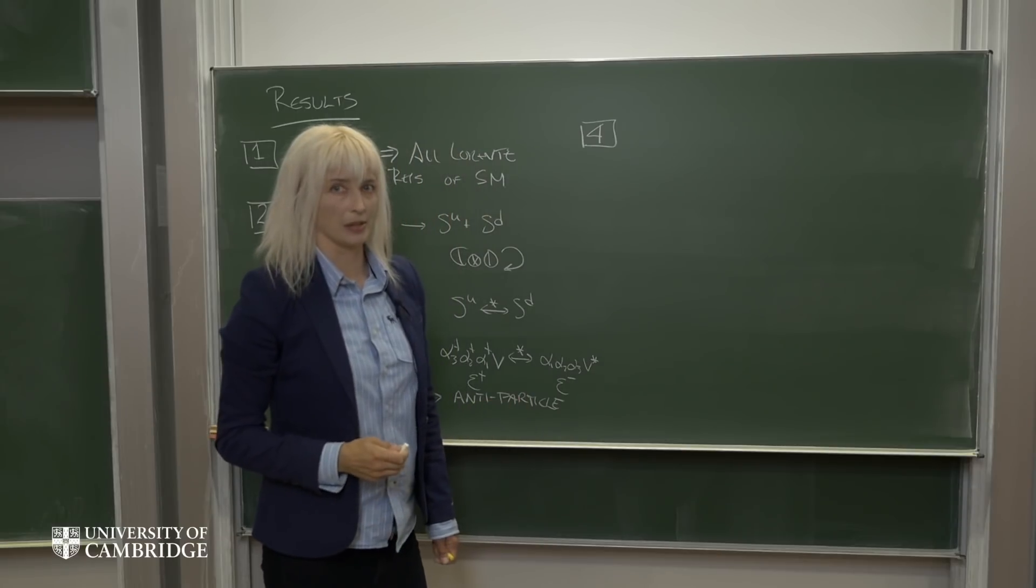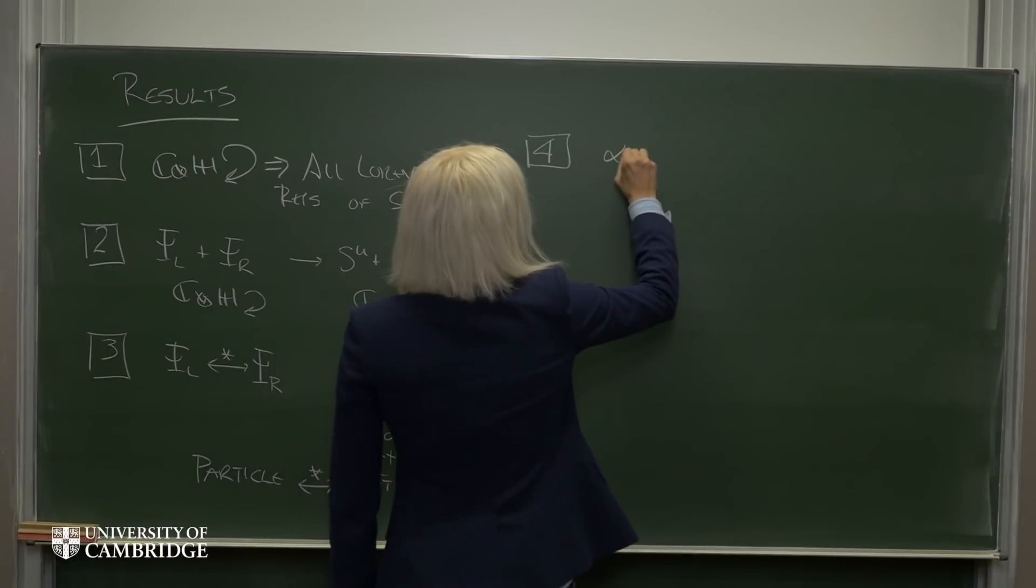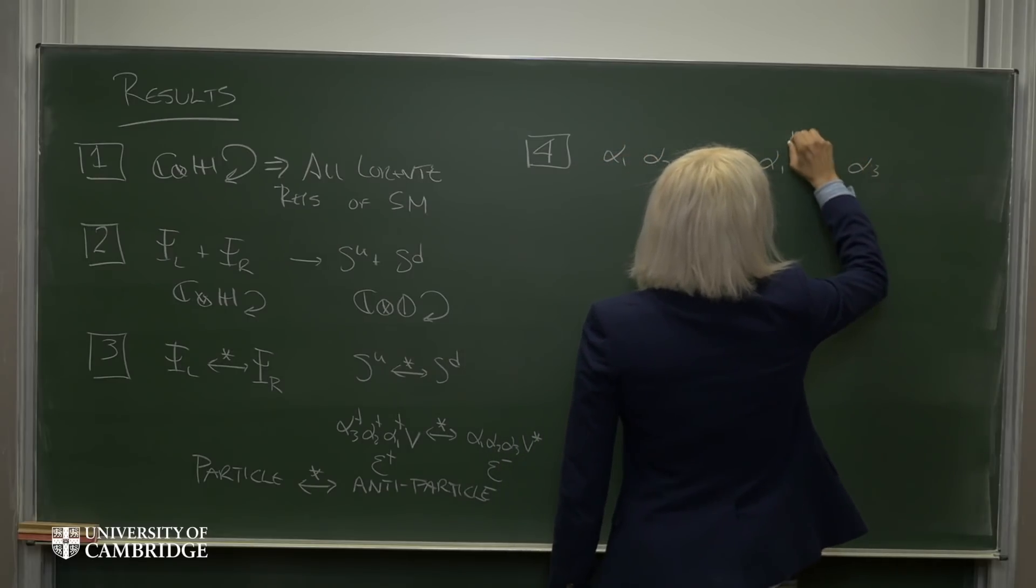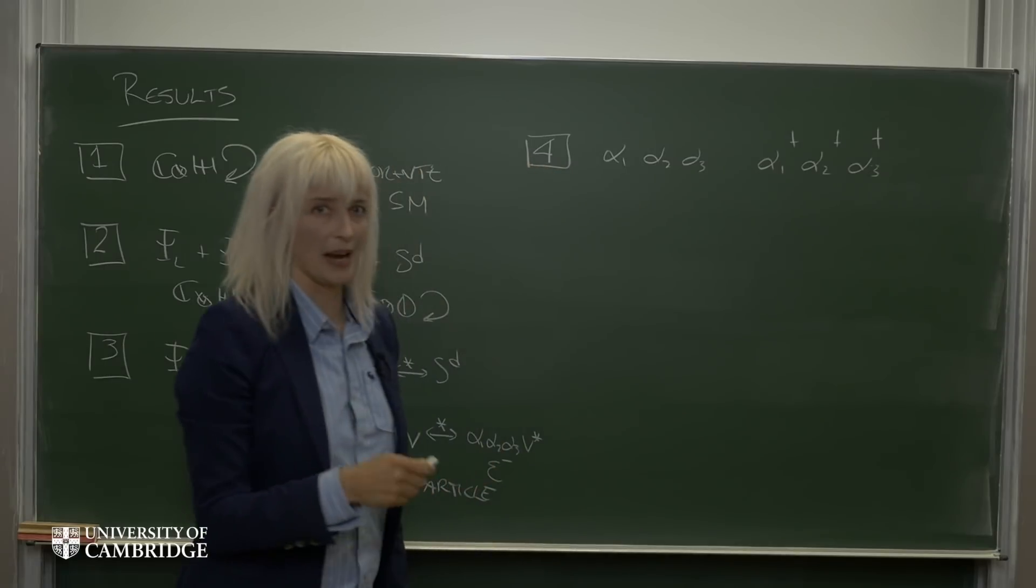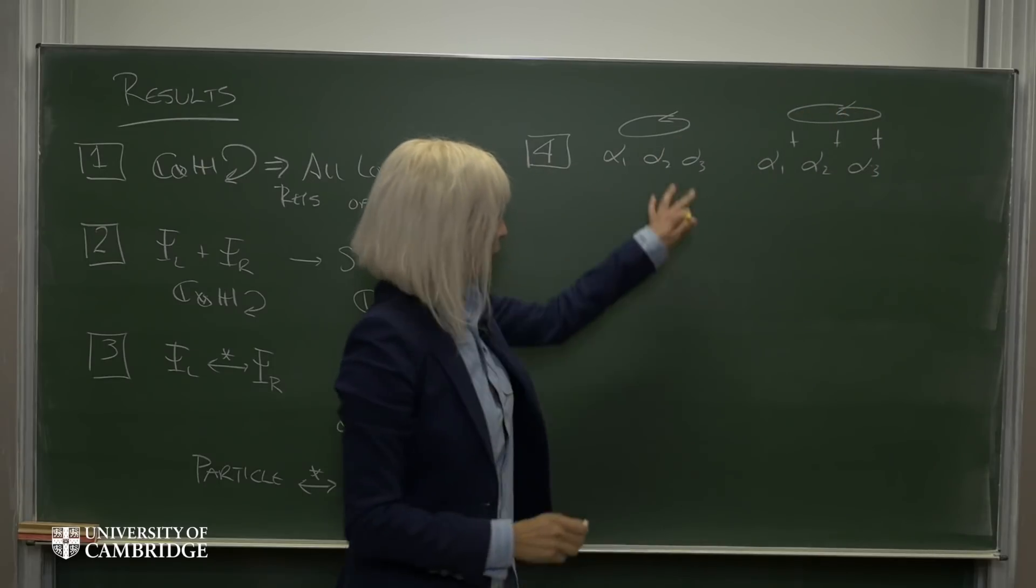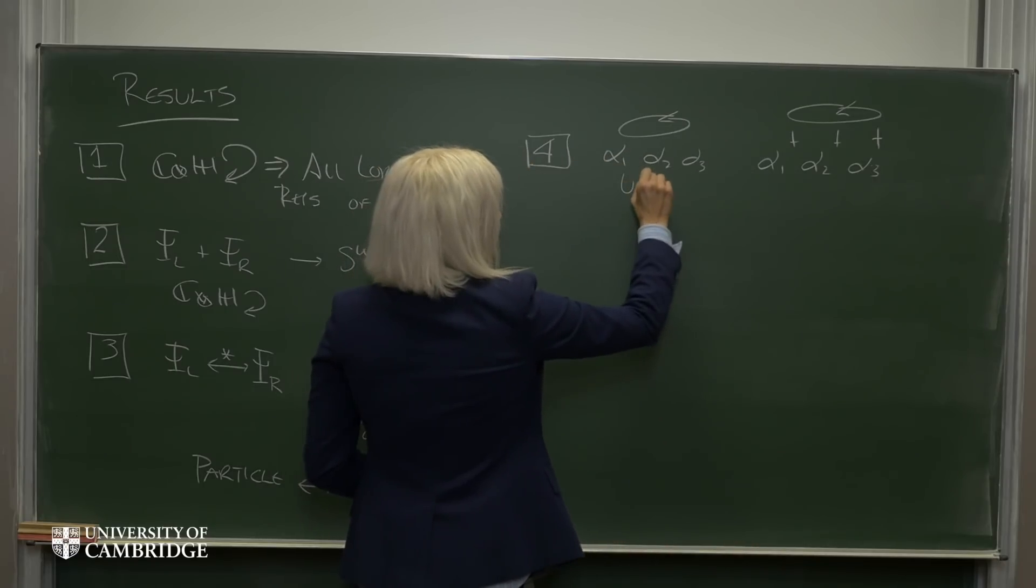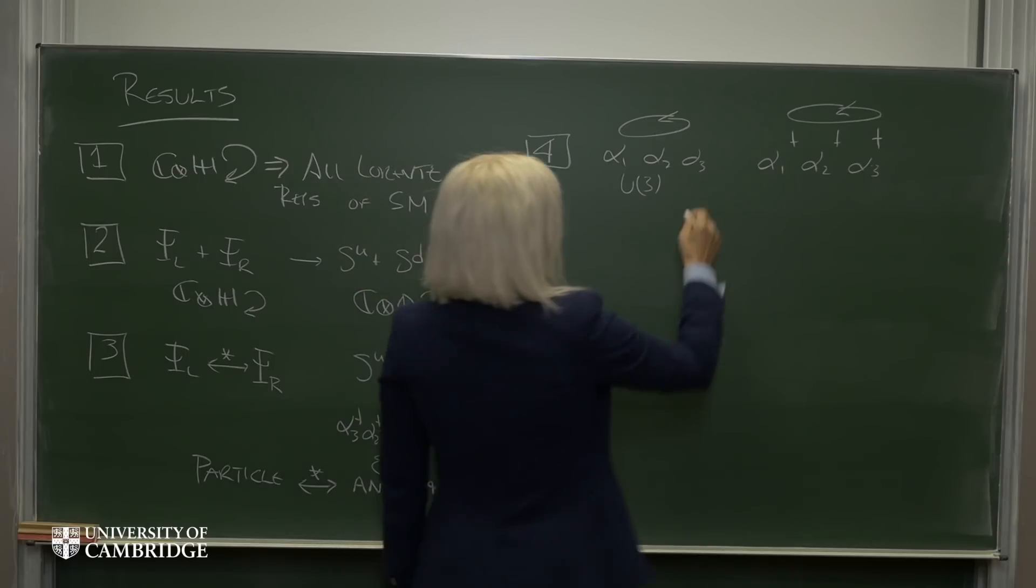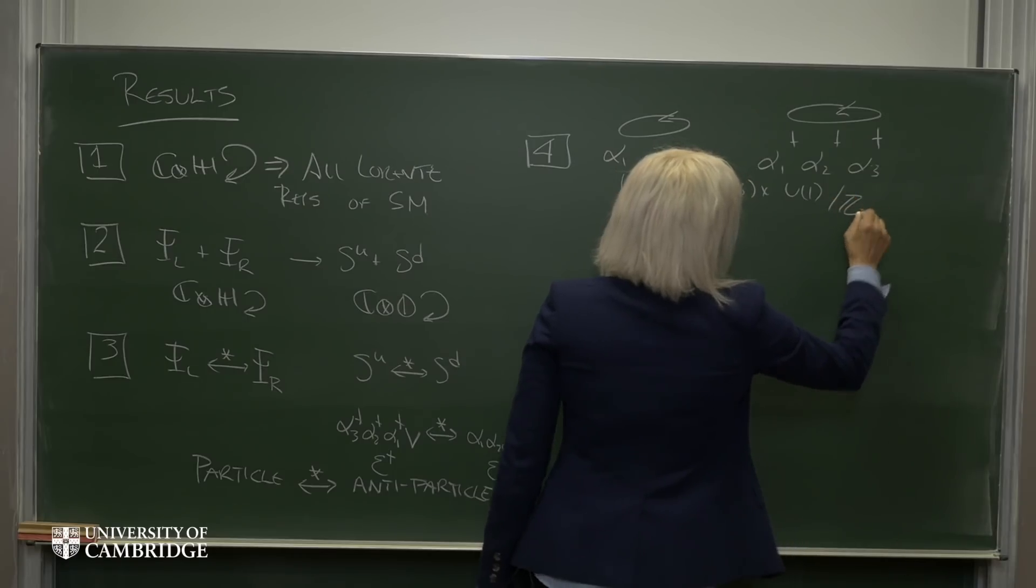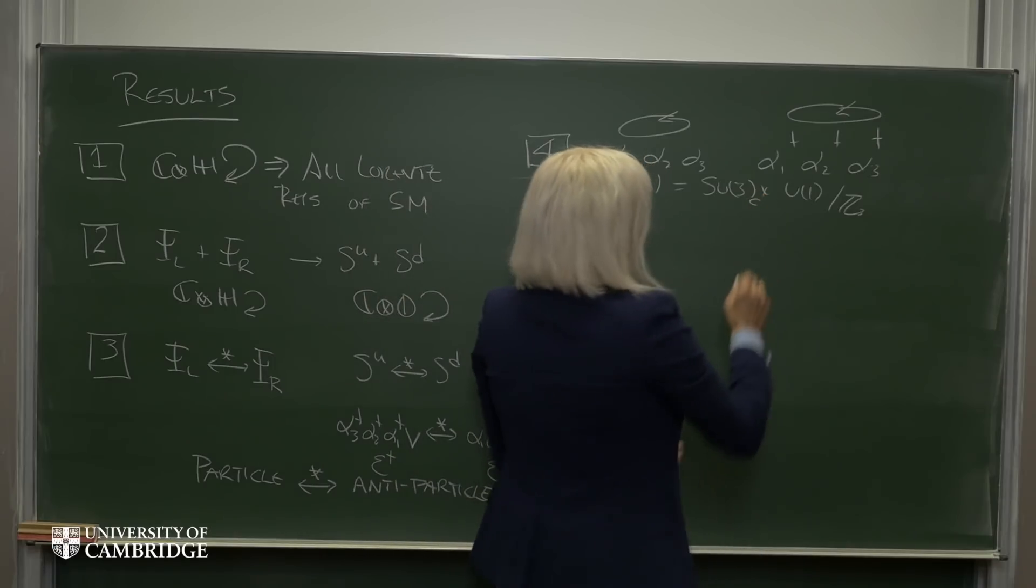Next, in the case of the complex octonions, we introduce these ladder operators, lowering operators and raising operators. And these operators had a U3 symmetry, which rotated lowering operators into lowering operators and raising operators into raising operators. This U3 symmetry is given by SU3 cross U1 over Z3, which we later identified as SU3 color and electromagnetic U1.